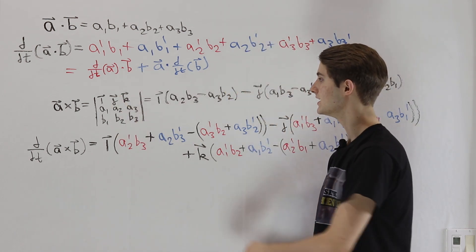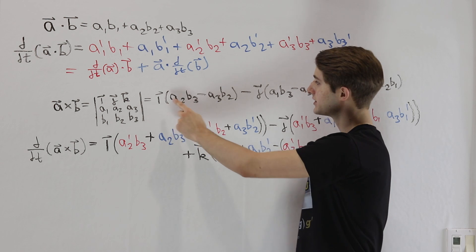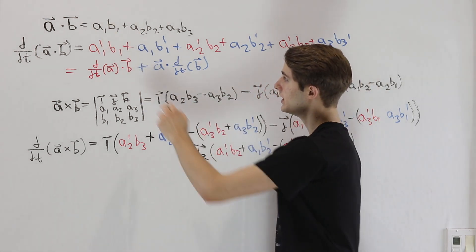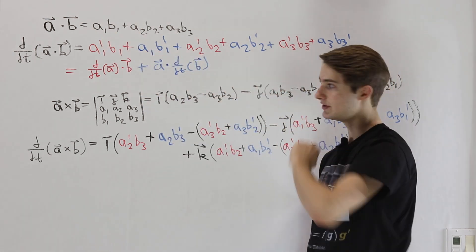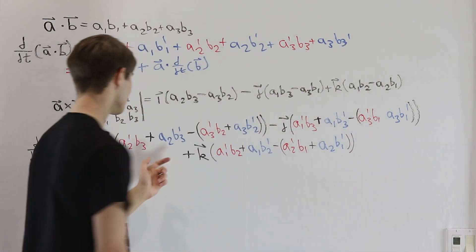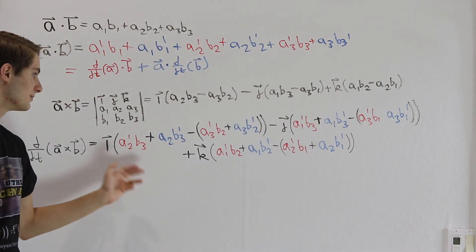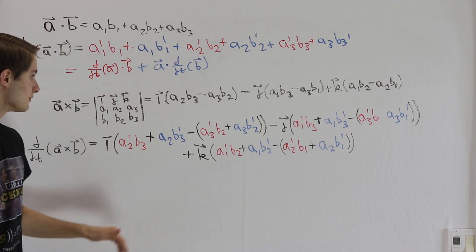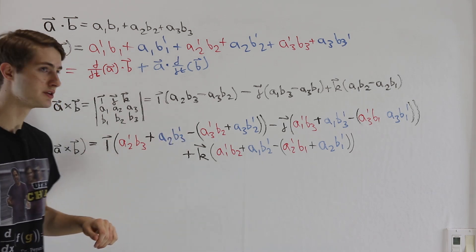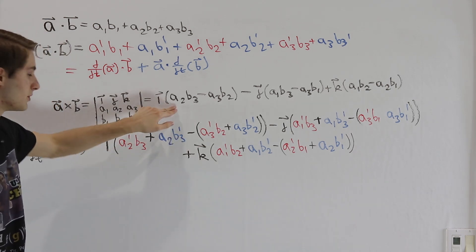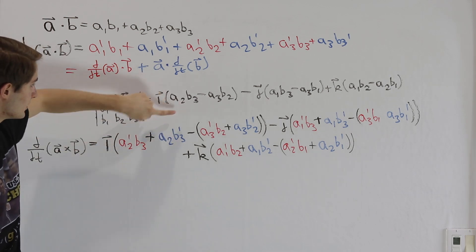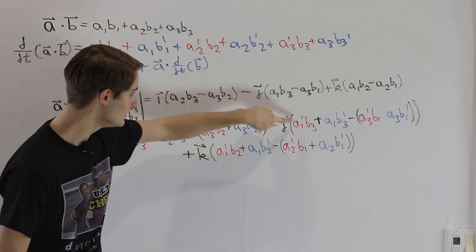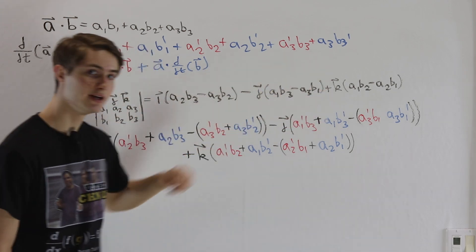In both cases, we're taking one component from the first vector times one component from the second vector. So we can split up the derivative in the same way, which is what I've done on the bottom here. This is the formula for the derivative of a cross product. When we look at all of the red components, we're taking a part of that original cross product formula and going from A to A' throughout.